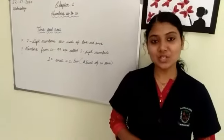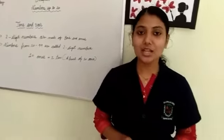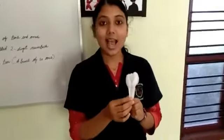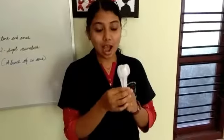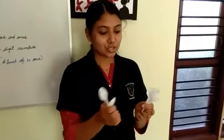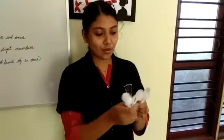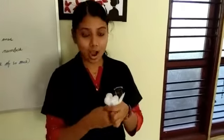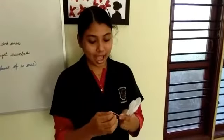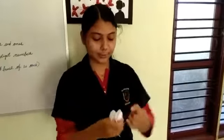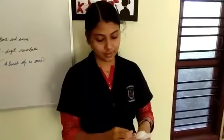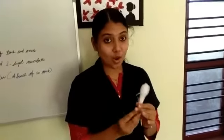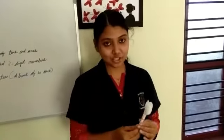As you all know, numbers from 10 to 99 are called two-digit numbers. Two-digit numbers are made up of ones and tens. See children, what is this? Yes, I have some spoons. Let's count how many I have: 1, 2, 3, 4, 5, 6, 7, 8, 9, and 10. How many do I have? 10 spoons. And now I'm going to tie these spoons.